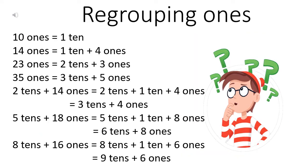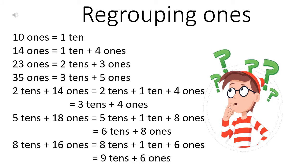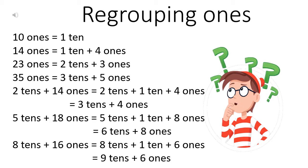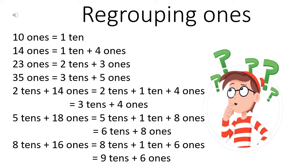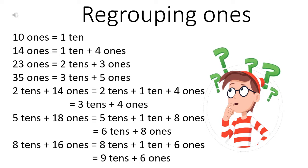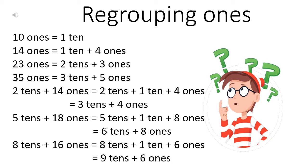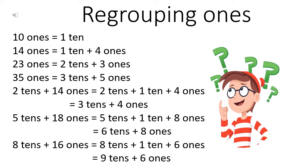Now let's understand it with the help of some examples. First of all, we will learn regrouping ones. You know, ten ones is equal to one ten. Suppose you collect all the pencils you have and you make bundles of ten each. You make one bundle of ten pencils — that means you got one ten. Now suppose you have four more pencils; you can't make one more bundle of tens, so we keep them loose. So you have one ten and four ones. This is regrouping — fourteen ones are regrouped as one ten plus four ones.